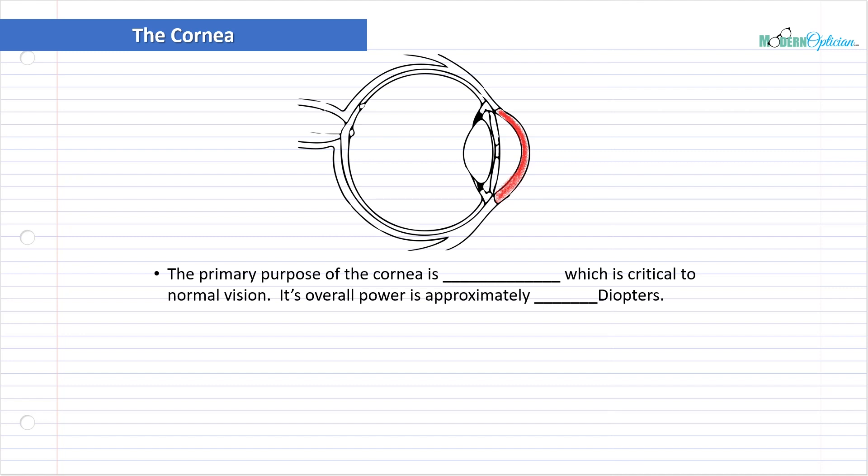The primary purpose of the cornea is refraction, which is critical to normal vision. Its overall power is approximately 43 diopters. I understand that in this course, different people may be coming with different experience. So sometimes if there's a concept or word that doesn't make sense right off the hop, don't worry because it's all going to come together. I'm going to elaborate as much as possible.